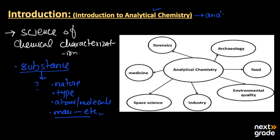Analytical chemistry means to analyze something, and it has many branches. We can analyze food using analytical techniques, we can check environmental quality, and it also relates to industry — the production methods and different things used in industry. It also relates to space science, to check how different things work. It also relates to medicine.